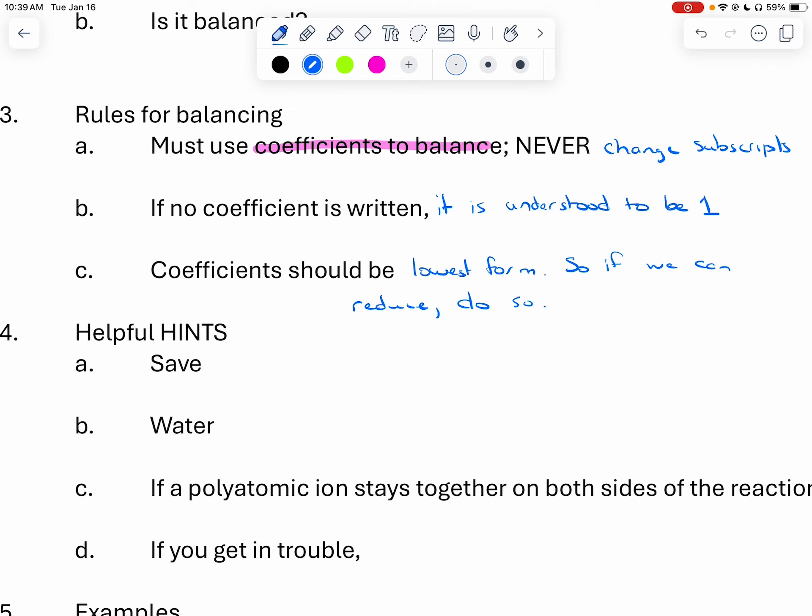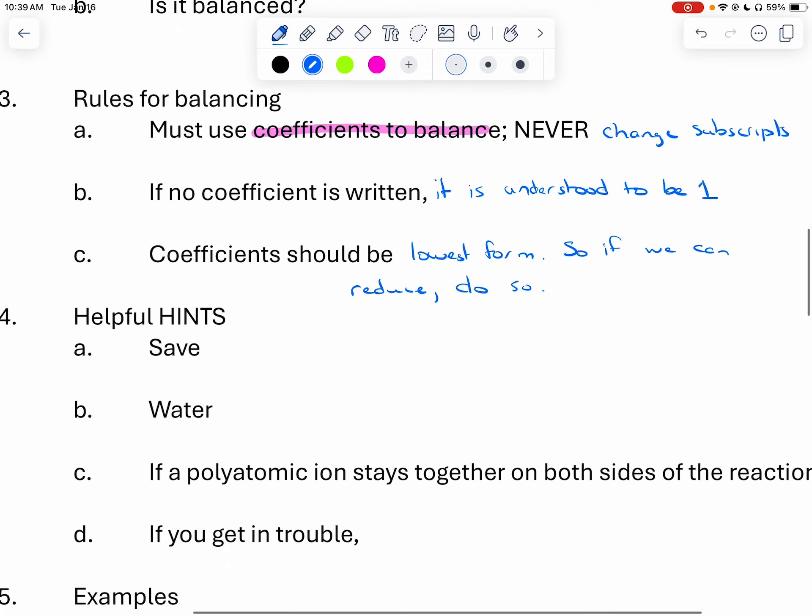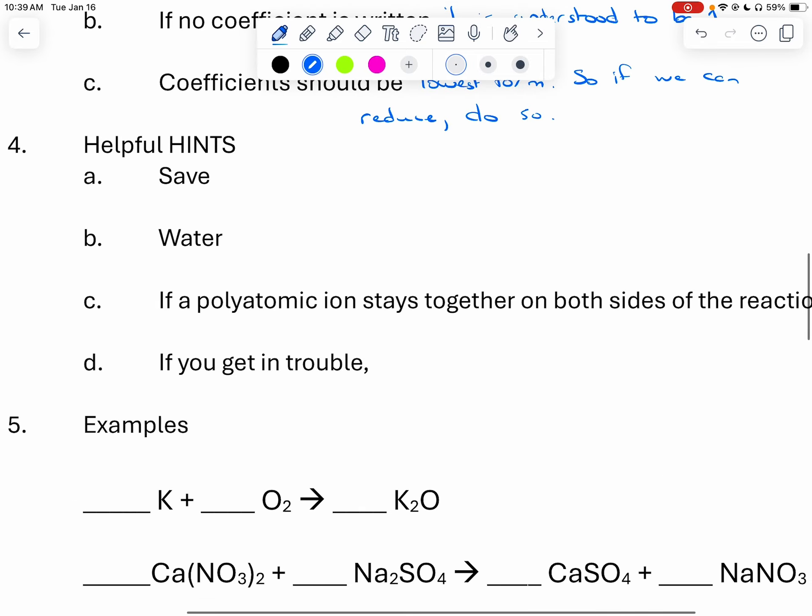Now that's the major rules. I've got some helpful hints. I've been teaching chem for a while. So let's talk about some helpful hints. First off, my suggestion is that we save carbon, hydrogen, and oxygen for last. That is because they appear all the time and they're kind of somewhat hard to balance if you start with them. So we're going to save them for last. Save carbon, hydrogen, and oxygen for last.